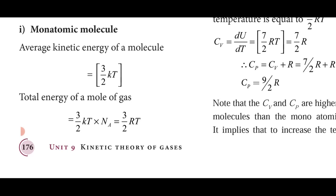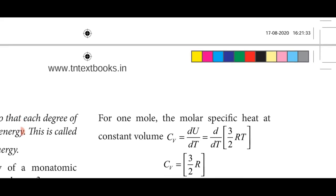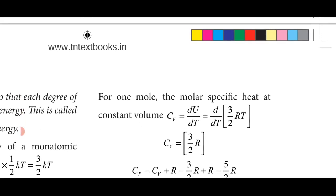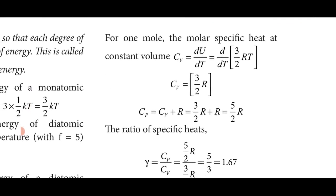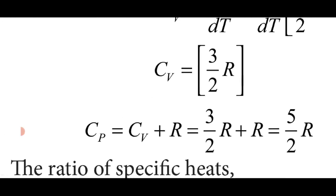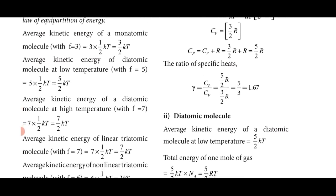For one mole at constant volume: Cv = dU/dT = d/dT(3/2 RT) = 3/2 R. Then Cp = Cv + R = 3/2 R + R = 5/2 R. The ratio of specific heats is μ = Cp/Cv = (5/2 R)/(3/2 R) = 5/3.